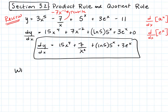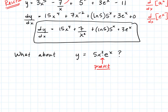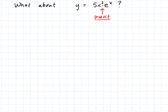But what if we come across something of this form — something as simple as y equals 5x squared times e to the x? How do I take that derivative? We don't actually have the skills to do that yet, because this is a product. While we have talked about sums and differences and how you take the derivative of each function separately, we have not talked about what to do with a product. That's what we're going to prove right now — we're going to develop what we call the product rule.